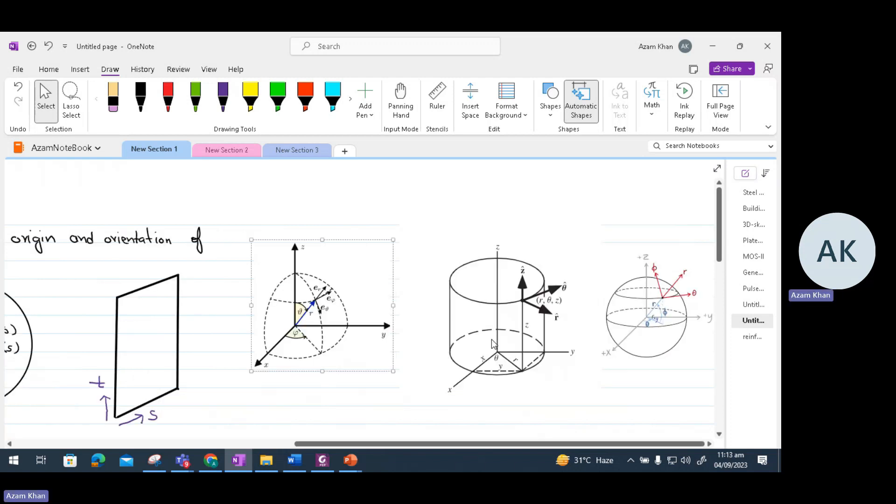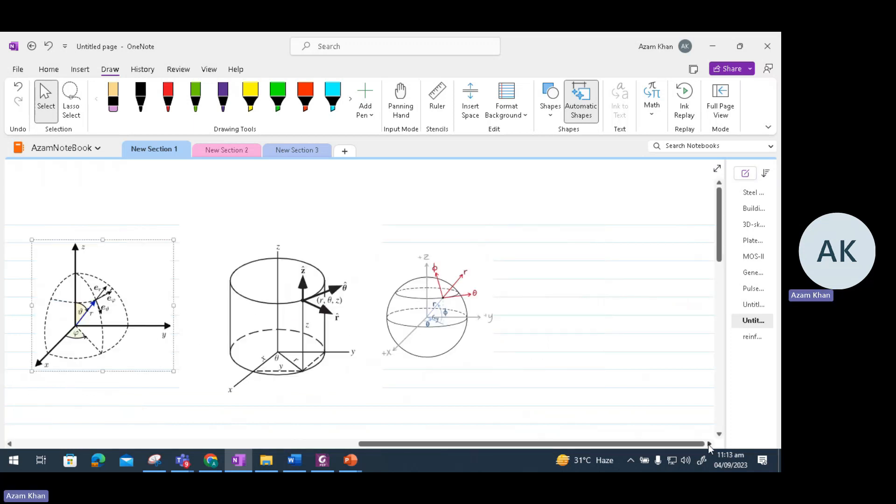Another important coordinate system is a cylindrical coordinate system. As the name suggests, this coordinate system is in the form of a cylinder. It is a three-dimensional system that extends polar coordinates by adding a height, which is the Z coordinate. It's often used to describe points in cylindrical objects or situations such as cylinders or pipes.